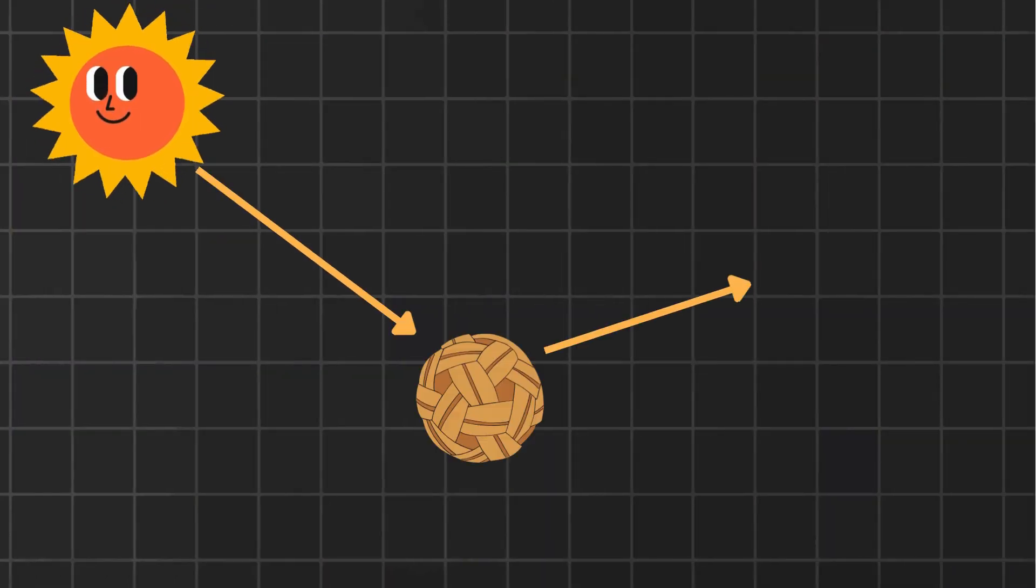What if I told you you can't see anything right now? That's because we need light to see. Light travels from an object to our eyes, but it doesn't happen instantly, especially in space.